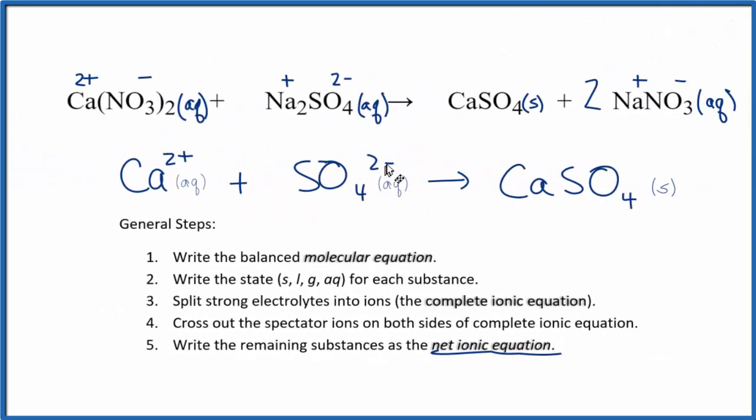One last thing to check. I want to make sure that this is balanced, that the charges are balanced and the number of atoms. So I have a 2+ here and a 2−. That should cancel out and give me a neutral compound. It does. I have one calcium here, one here, one sulfur, one sulfur, and then four oxygens and four oxygens. So this is the correct net ionic equation for calcium nitrate and sodium sulfate.